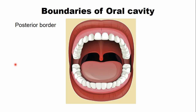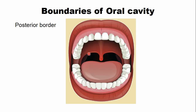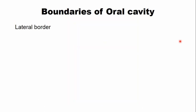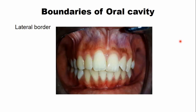Looking at the diagram of the oral cavity, the posterior border is formed by the anterior pillar of fauces together with part of the tonsil. The lateral border of the oral cavity is formed by the buccal mucosa.